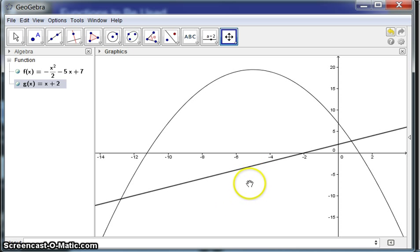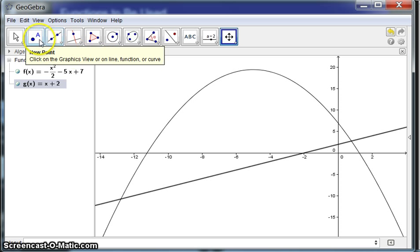It's also very easy to find points of intersection, or I should really say, in this case, approximate points of intersection. One way to do that, or probably the easiest way to do that, it's just getting used to where some of these things are located, is this point menu up here.